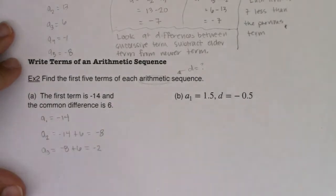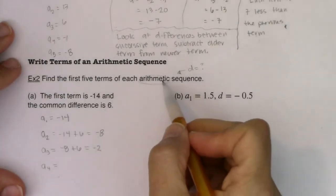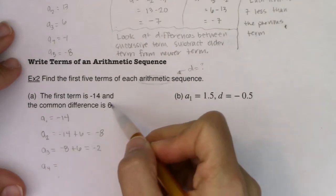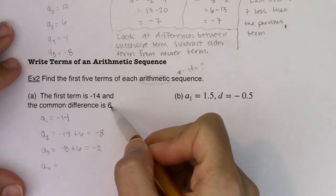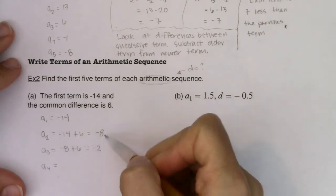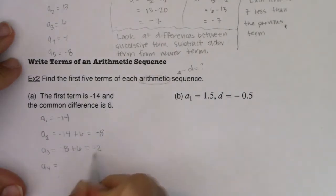So A sub three must be my preceding term of negative eight plus six. So in this case, it's negative two. And I can continue on in this pattern because that's what an arithmetic sequence is. All you do is add or subtract, depending on whether D is positive or negative, add that common difference to each successive term. So I will do negative two plus six, which is four. And last but not least, we will do four plus six, which is 10.